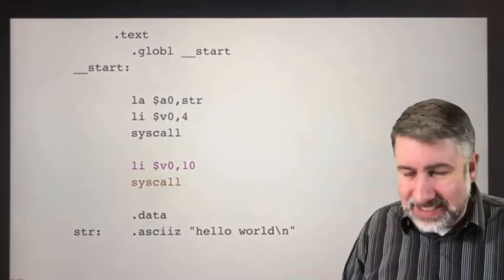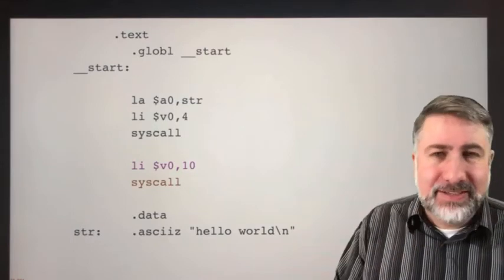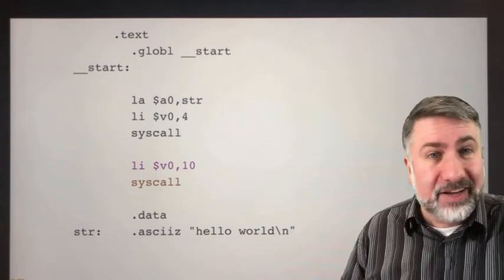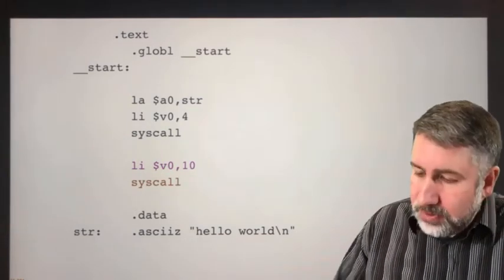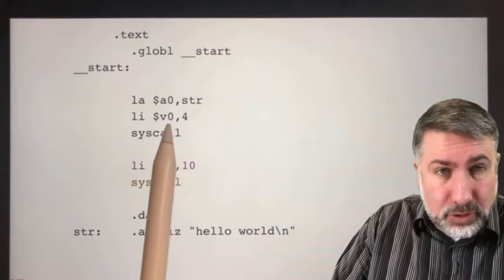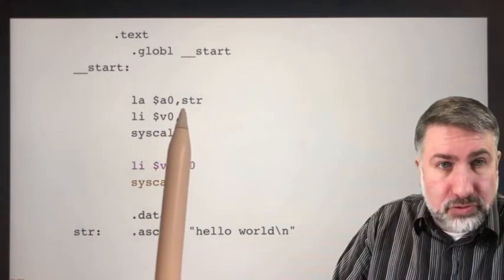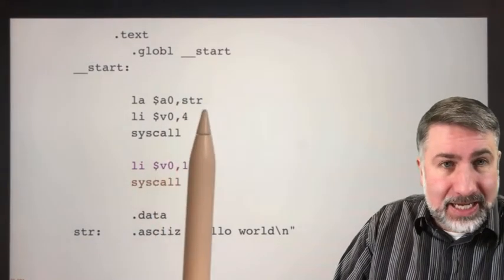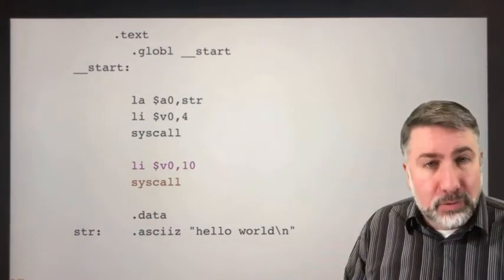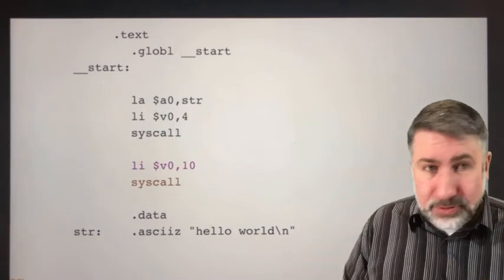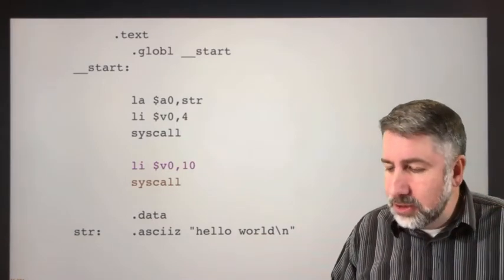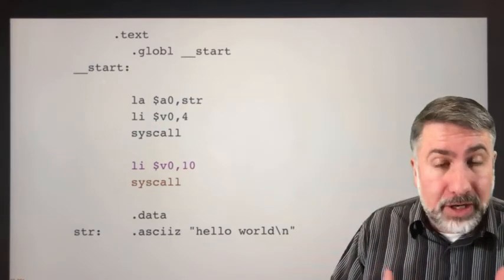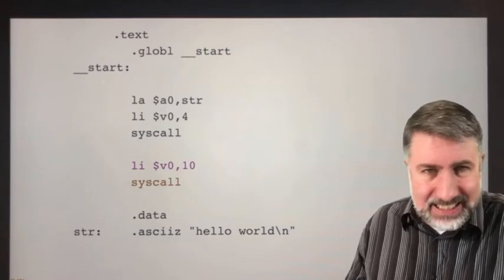We're going to continue now with this example. There's a lot of detail, but I want to use this as an opportunity to introduce things like pseudo instructions. Once we've told the system using v0 equals 4 to draw out on the screen the ASCII address specified by str, now we're going to tell the operating system that we're done. Load immediate v0 10 puts the number 10 into v0 using ori instead of li because li is not a real instruction.